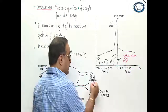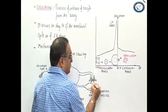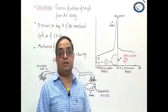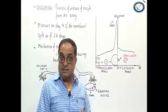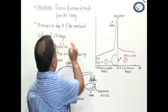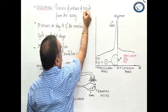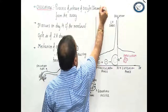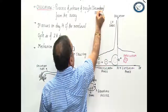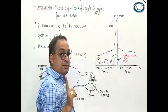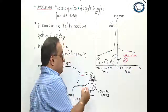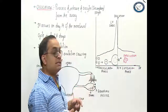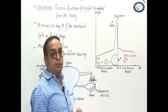The structure released from the ovary is the oocyte — it is not ovum, please remember. It is actually secondary oocyte which is arrested at metaphase 2 stage. This secondary oocyte will enter into the fallopian tube, captured by the fimbriae.